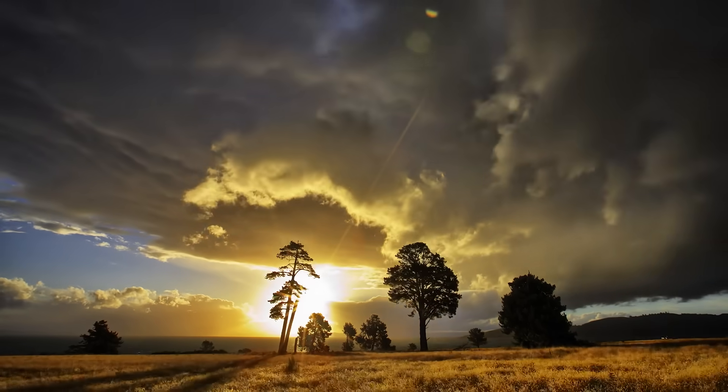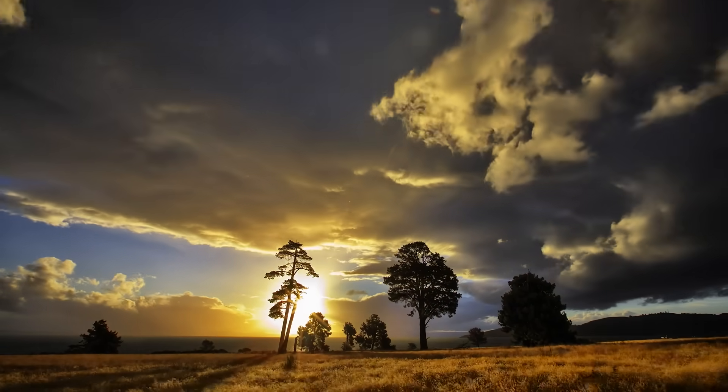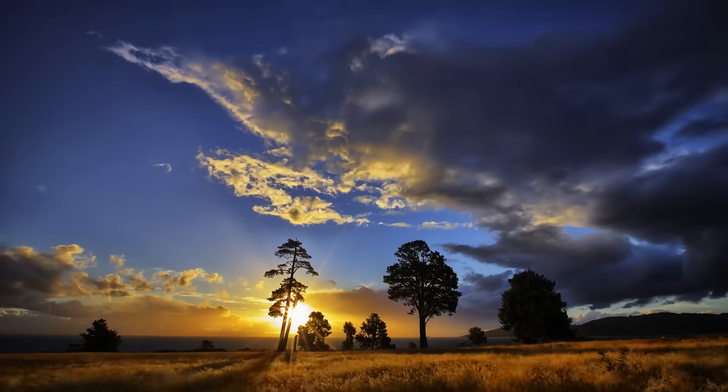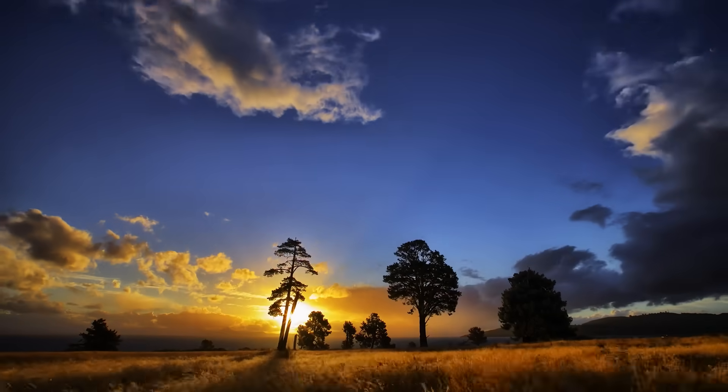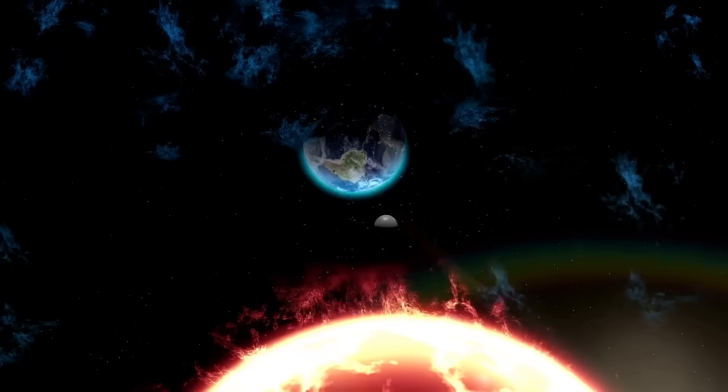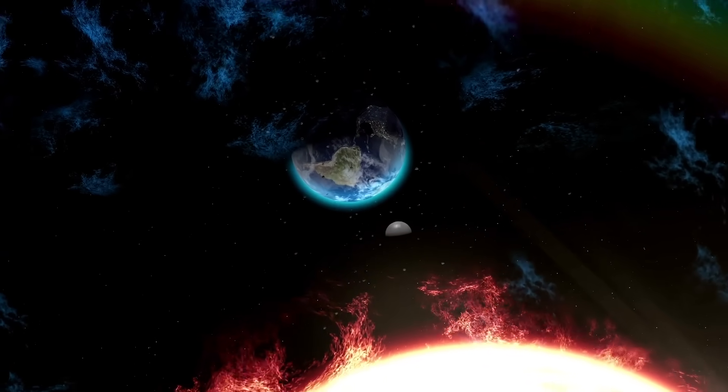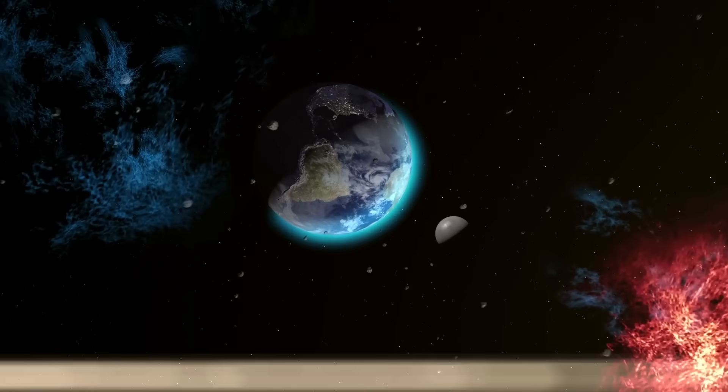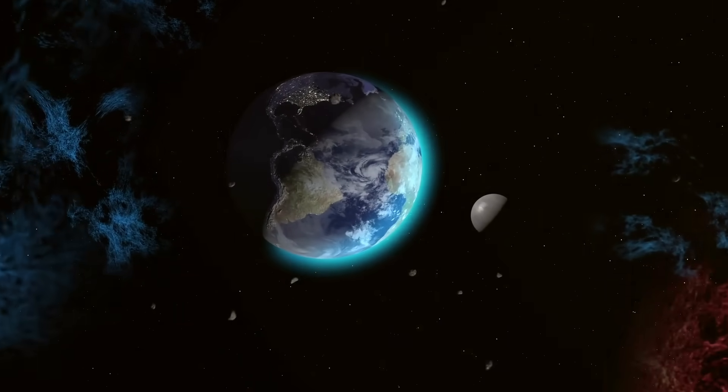Another solution would be for Earth to have a much thicker atmosphere that could trap heat and protect life from radiation, which could be achieved by filling the atmosphere with greenhouse gases like methane. Although this is detrimental in the modern era, if the Earth were to orbit Proxima Centauri, it might be an effective solution to deal with temperatures and radiation.